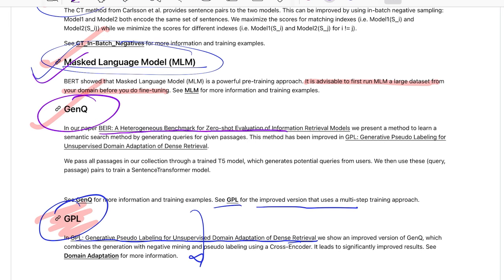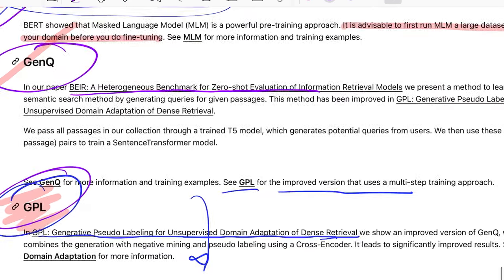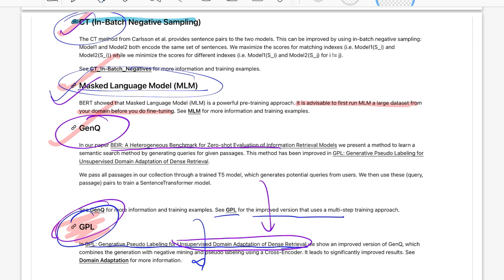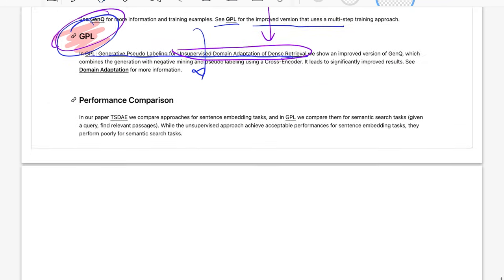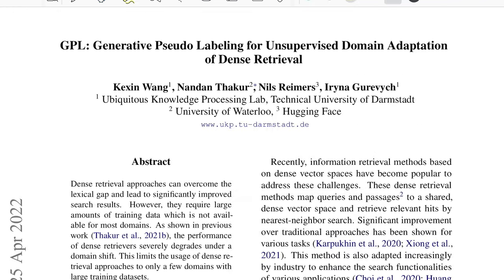For today we'll be touching upon the final algorithm that they have mentioned, which is GPL that stands for Generative Pseudo Labeling for Unsupervised Domain Adaptation of Dense Retrieval. So this technique builds on top of GenQ and improves it significantly is what they claim. So let's directly jump onto the paper to see what they propose.